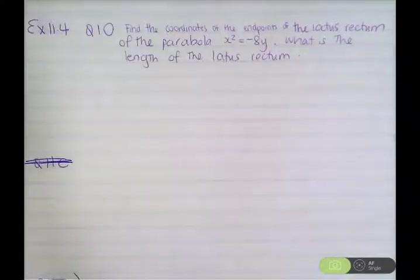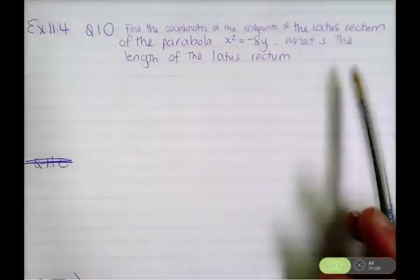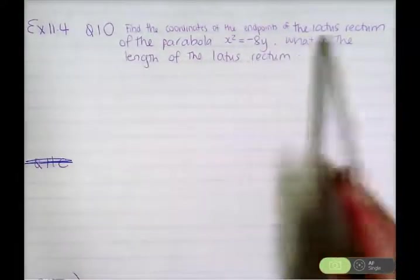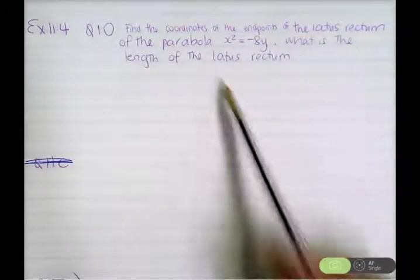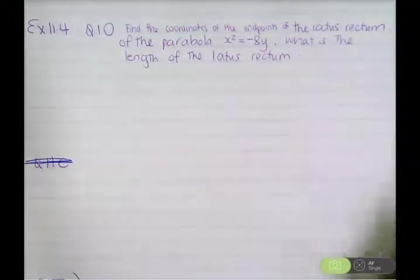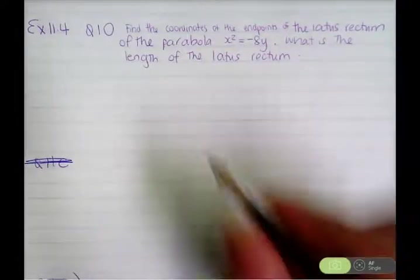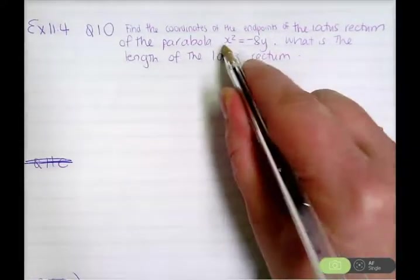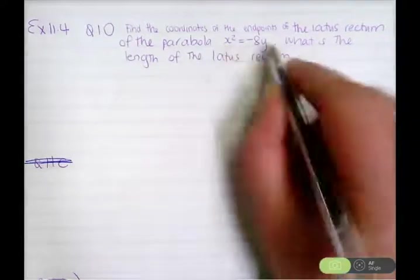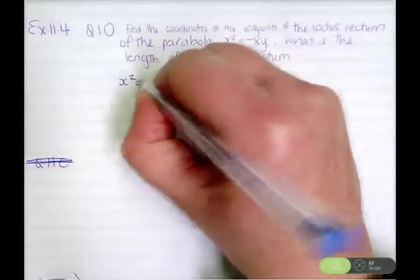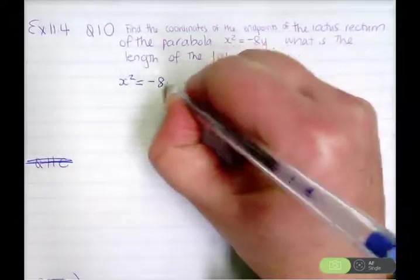This is exercise 11.4, question 10, homework problems. Find the coordinates of the endpoints of the latus rectum of the parabola x squared equals negative 8y, and what is the length of the latus rectum? The only information we seem to be given is the parabola x squared equals negative 8y.